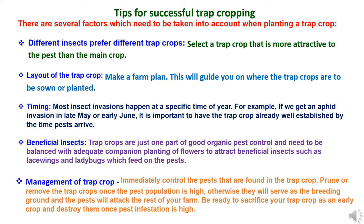Second tip is the layout of the trap crop. Make a farm plan to guide where trap crops are to be planted. For some insects, it is sufficient to plant the trap crop around the border of your growing area. Others are harder to stop and it may be necessary to interplant them. Quantities depend on the insects you are trying to deter, but farmers usually set aside about 20% of the main crop area for the trap crop. A smaller garden growing a variety of vegetables will often need less.